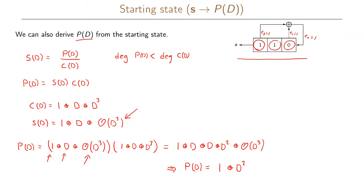To summarize: if we want to find P(D) and we have our connection polynomial C(D) and the starting state — which gives the first few bits of our sequence — we find P(D) by doing this multiplication. We can now write S(D) equals 1 plus D squared divided by the connection polynomial 1 plus D plus D cubed.